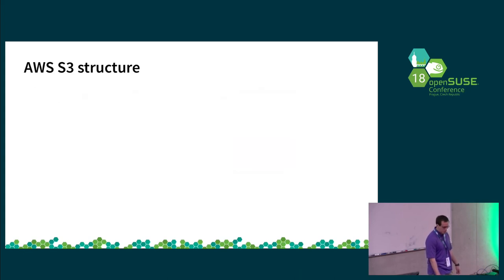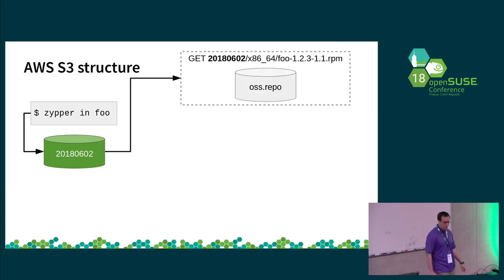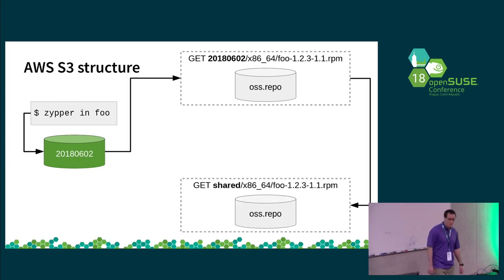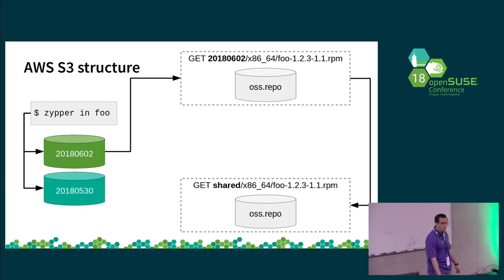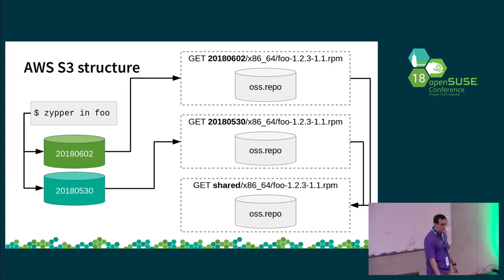To visualize a request: if we are trying to install the foo package for the 6.02 snapshot, that would generate a GET request for the 6.02 snapshot of that RPM, which would end up being redirected to the shared directory for the same file. If we were running an older snapshot and did the same thing, we would get a request for that snapshot redirected to the same place — basically saving us the space of storing loads of the same thing.